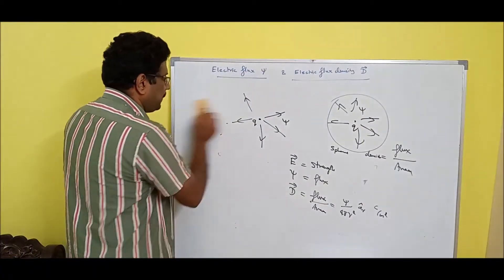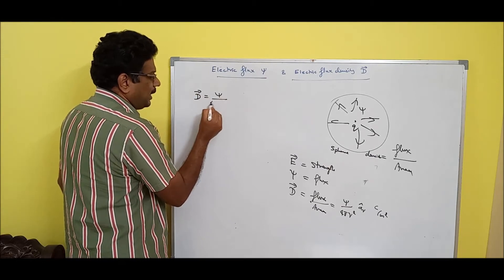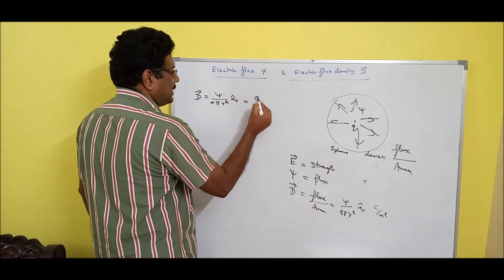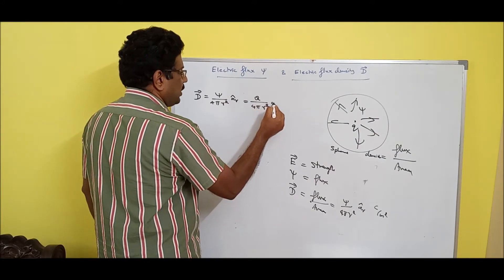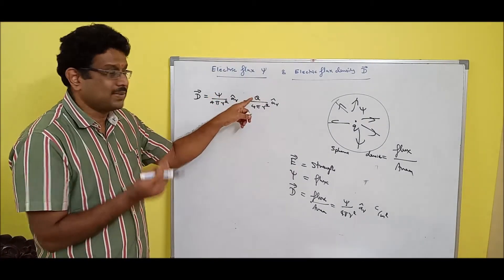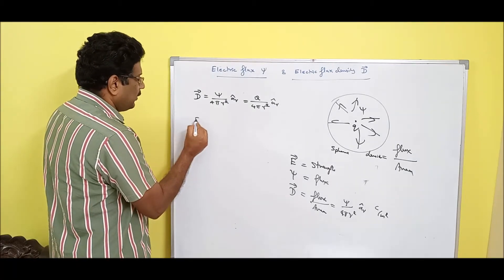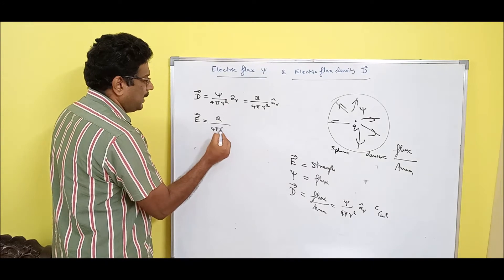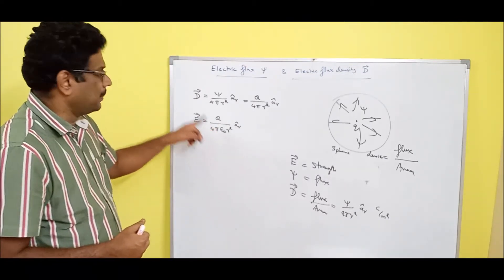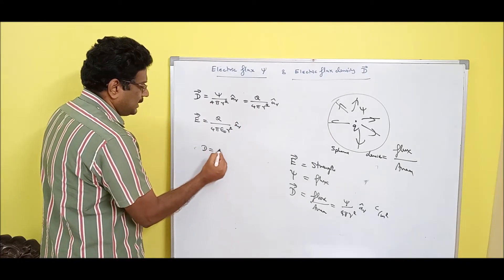Electric flux density D equals psi divided by 4πr² times ar cap. Since flux equals charge, you can also write D as Q divided by 4πr² ar cap. Both are the same — charge is in a metal, flux is in free space; fire is to heat as charge is to electric flux. We already know E equals Q divided by 4π epsilon-not r² ar cap. The basic difference: strength E depends on the medium, but density D is independent of the medium. Finally, D equals epsilon-not times E.